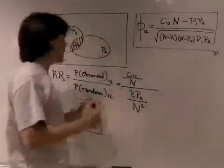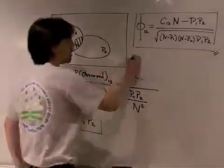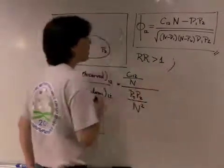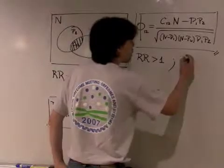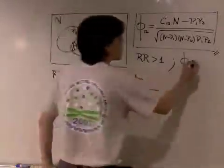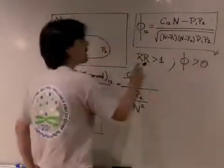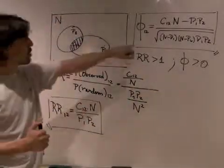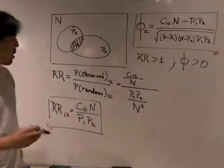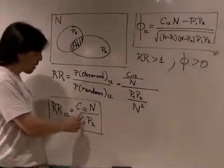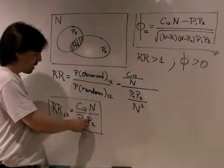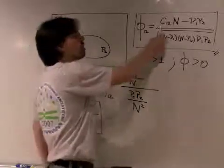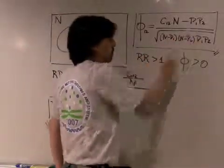We say that two diseases are comorbid when the relative risk between them is larger than 1, or when the correlation between them is larger than 0. This actually happens at the same place because, if you pay attention to the formulas, the relative risk is larger than 1 when C12 times N is larger than P1 times P2, and the correlation is larger than 0 under the same condition: when C12 times N is larger than P1 times P2.